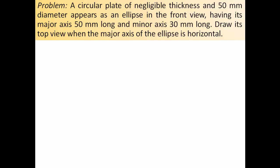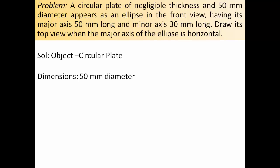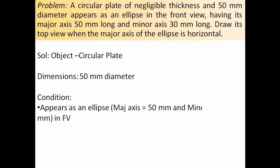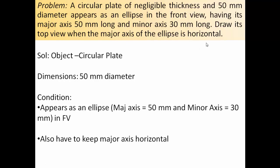The object is a circular plate having a dimension of 50 mm diameter. This circular plate has been kept in such a way that it appears as an ellipse in the front view, with a major axis of 50 and minor axis of 30. There is one more condition: you have to make the top view considering the major axis of the ellipse to be horizontal. Both these conditions have to be reflected perfectly in the drawing.